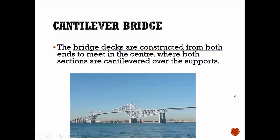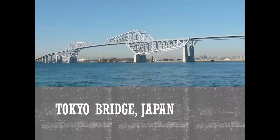Then you get the cantilever bridge. The bridge decks are constructed from both ends to meet in the center, where both sections are cantilevered over the supports. A cantilever basically hangs over and touches that side — hangs over and touches that side. If you can't remember, just Google cantilevers and you'll remember what that is. For all of these bridges, please read up a little bit more in your books so that if essay questions come up, you have more information. The Tokyo Bridge is a good example of a cantilever bridge.